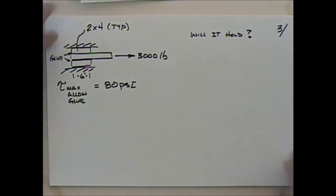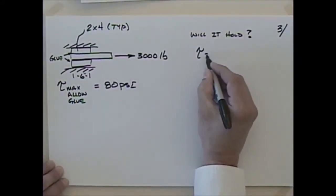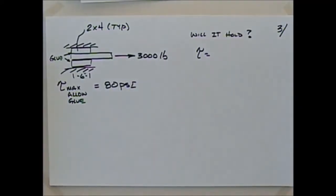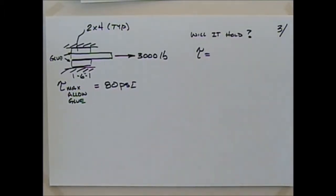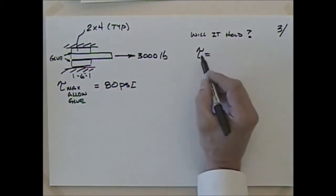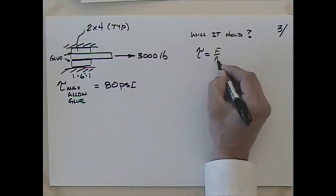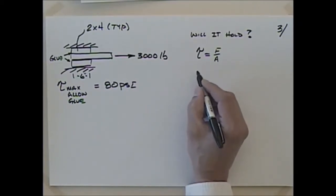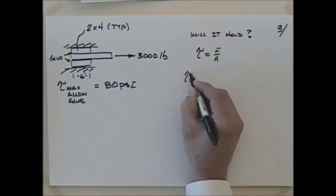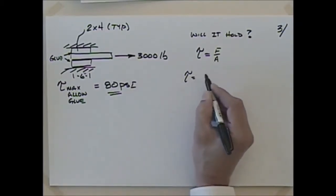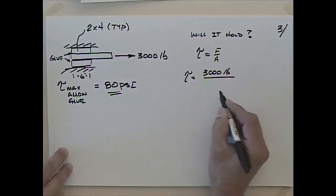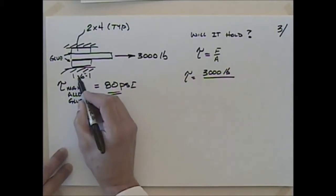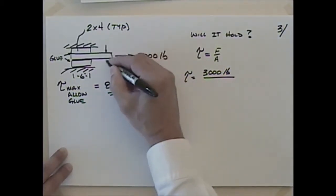We're told that this dimension is 6 inches, and we're asked: will it hold? We're going to use shear stress tau — that being the glue this time. We'll concentrate on the glue here, though prudent engineering would also have us check the wood. Shear stress equals force divided by area. The force is 3,000 pounds. If this is a 2x4, the dimension is 1.5 inches, and we'll say 3.5 inches in and out of the board.